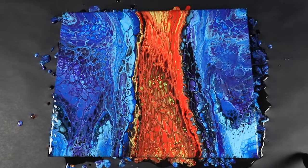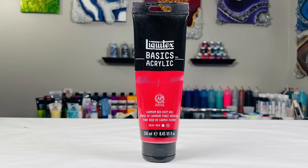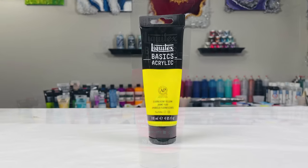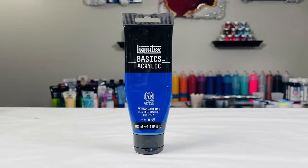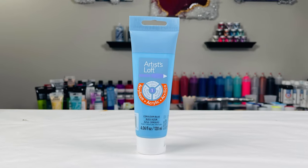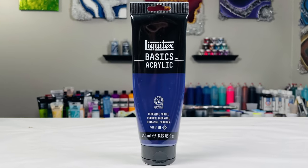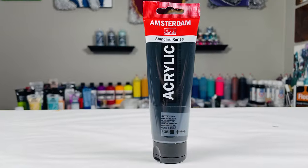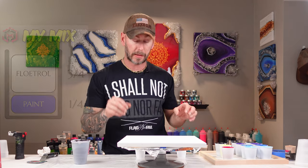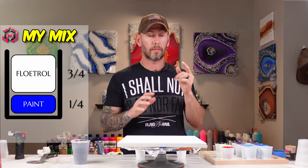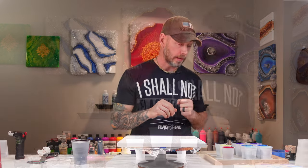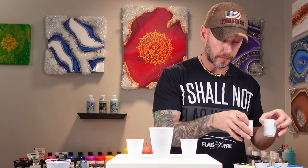The colors we're going to be using today are cadmium red deep hue, fluorescent yellow, phthalo blue, cerulean blue, dioxazine purple, and oxide black. Now all these colors they were mixed three to one, pouring medium to paint. But with that we're just going to start layering our cups.